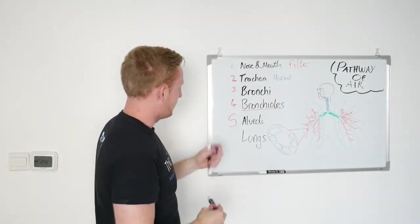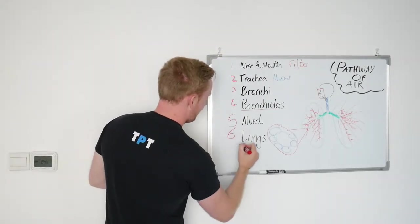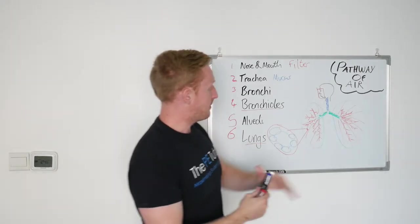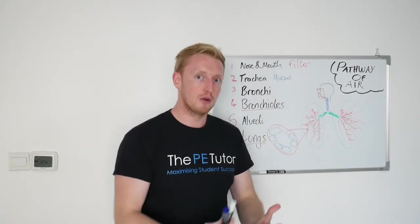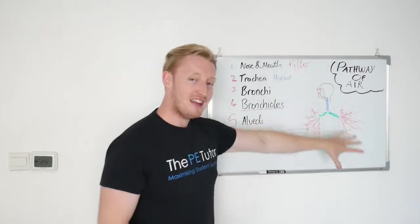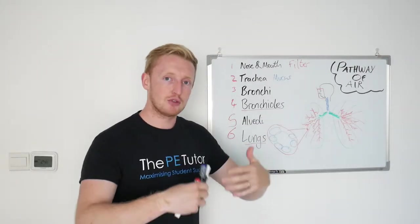Obviously, we've got the last one here, the lungs. I've already mentioned that they are the two big things inside of which all of this is happening, but the role that they play is that they're attached to the rib cage.